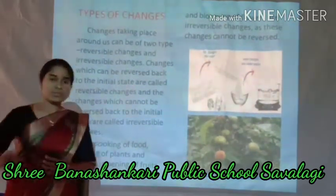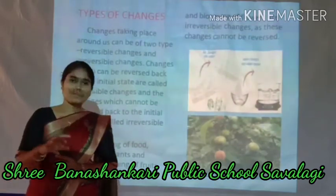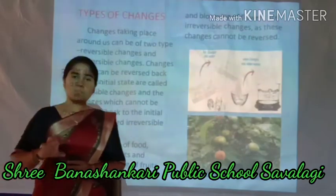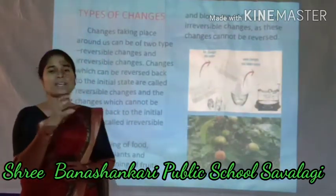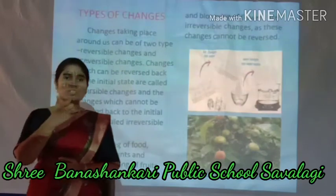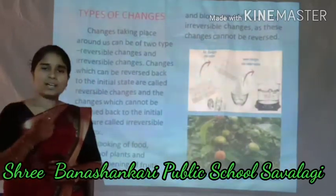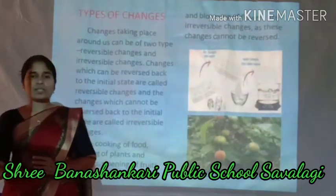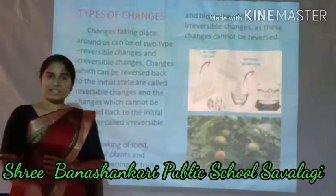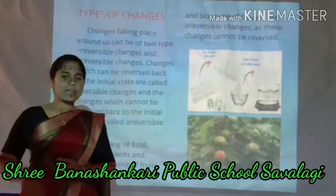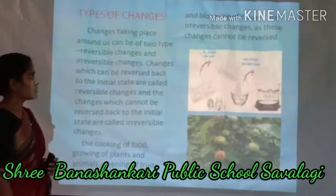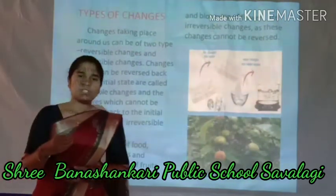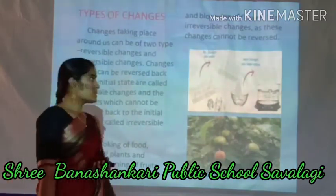The cooking of food, growing of plants and animals, ripening of fruits, and blooming of flowers are all irreversible changes. Once food is cooked and boiled, can we get back to its initial state? No — it is the irreversible change. That is the irreversible change.